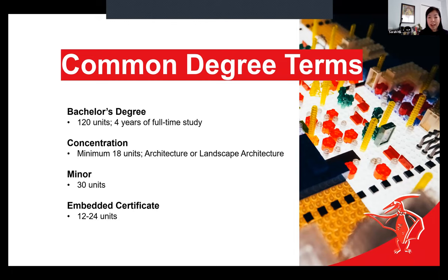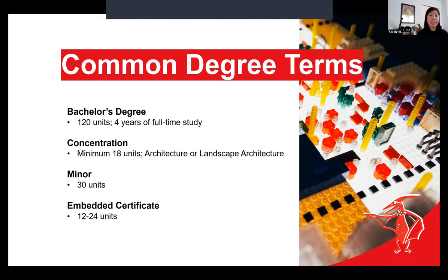Specifically in BDCI, we have the architecture or landscape architecture concentrations — you can learn more about that as you progress in your degree. Aside from the concentration, we have the minor — typically a minimum of 30 units, a secondary area of specialization within the bachelor's degree. And finally, the embedded certificate, similarly a secondary specialization, requires around 12 to 24 units. The concentration, the minor, and the embedded certificate are usually completed in tandem with your degree requirements.